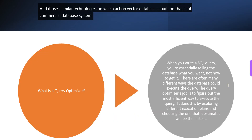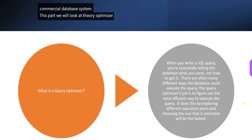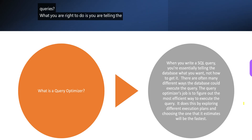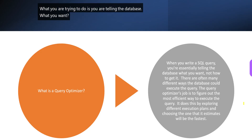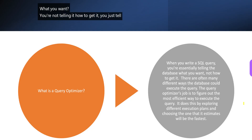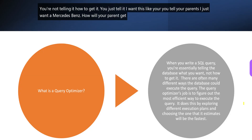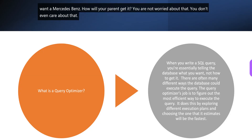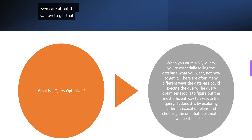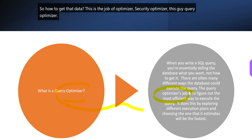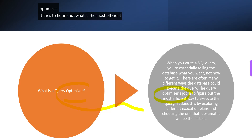In this part, we will look at query optimizer. So what is a query optimizer when you write SQL queries? What you are trying to do is, you are telling the database what you want, you are not telling it how to get it. You just tell it, I want this — like you tell your parents, I just want a Mercedes Benz. How will your parent get it, you are not worried about that, you don't even care about that.